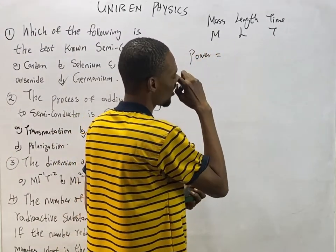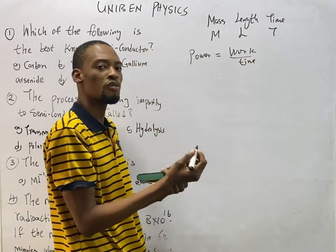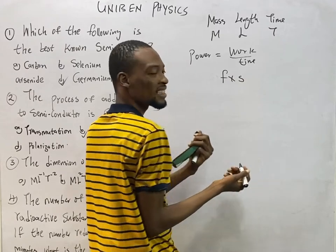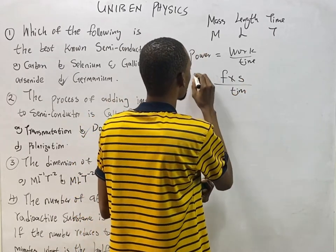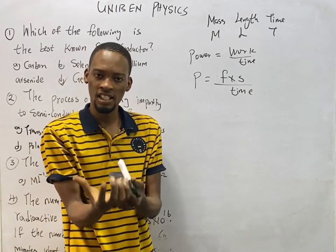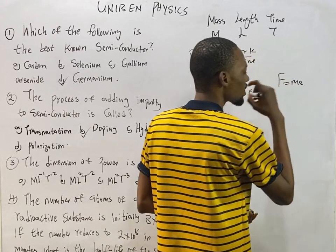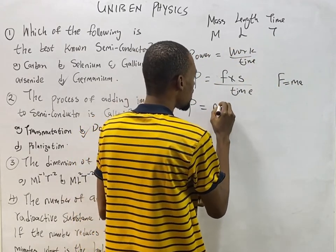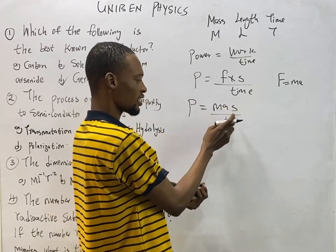Power equals work over time — it is the time rate of doing work. Work equals force times distance, so power equals force times distance over time. From Newton's second law, force equals mass times acceleration (F = ma), so power equals mass times acceleration times distance over time: P = m·a·s/t.